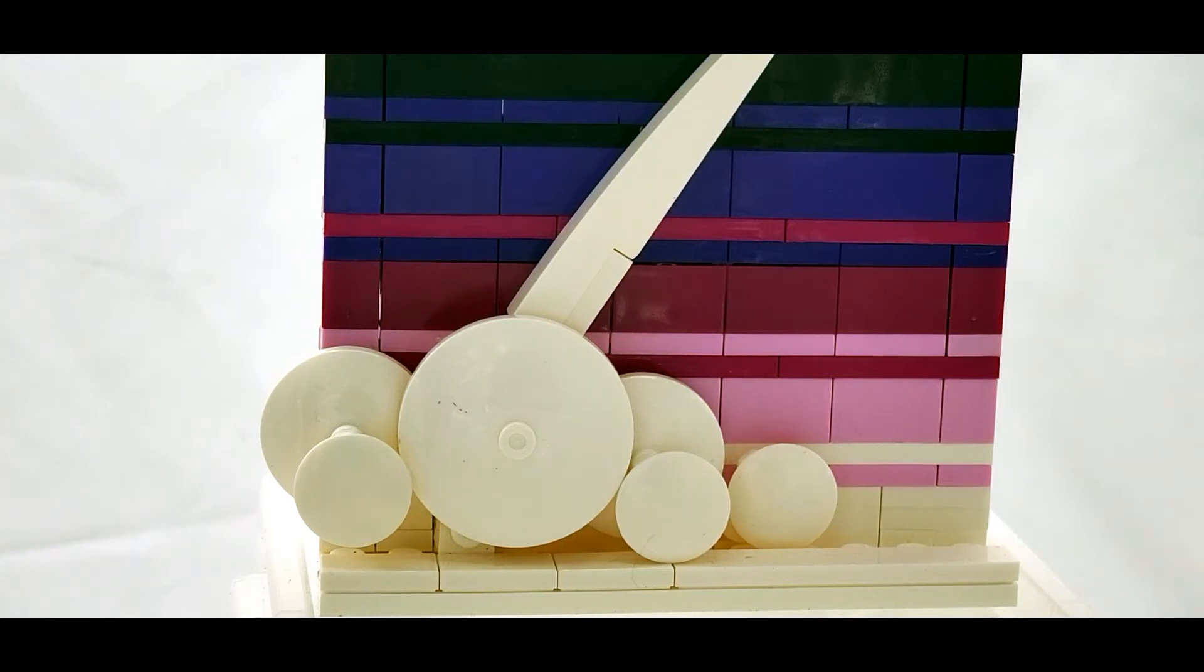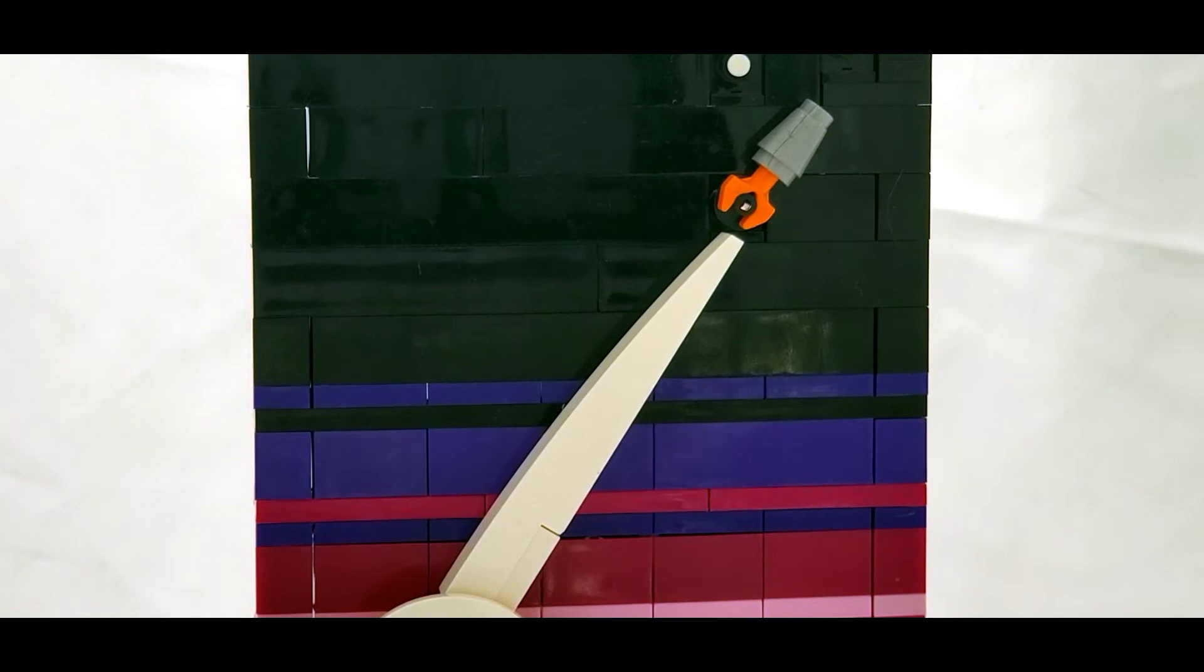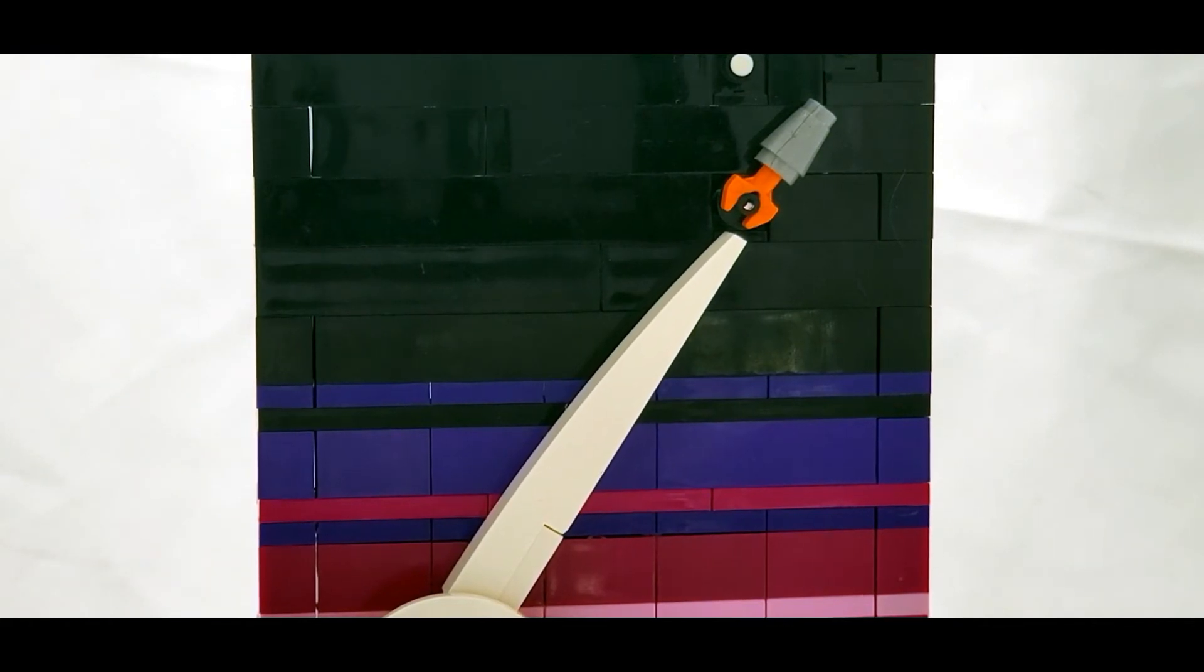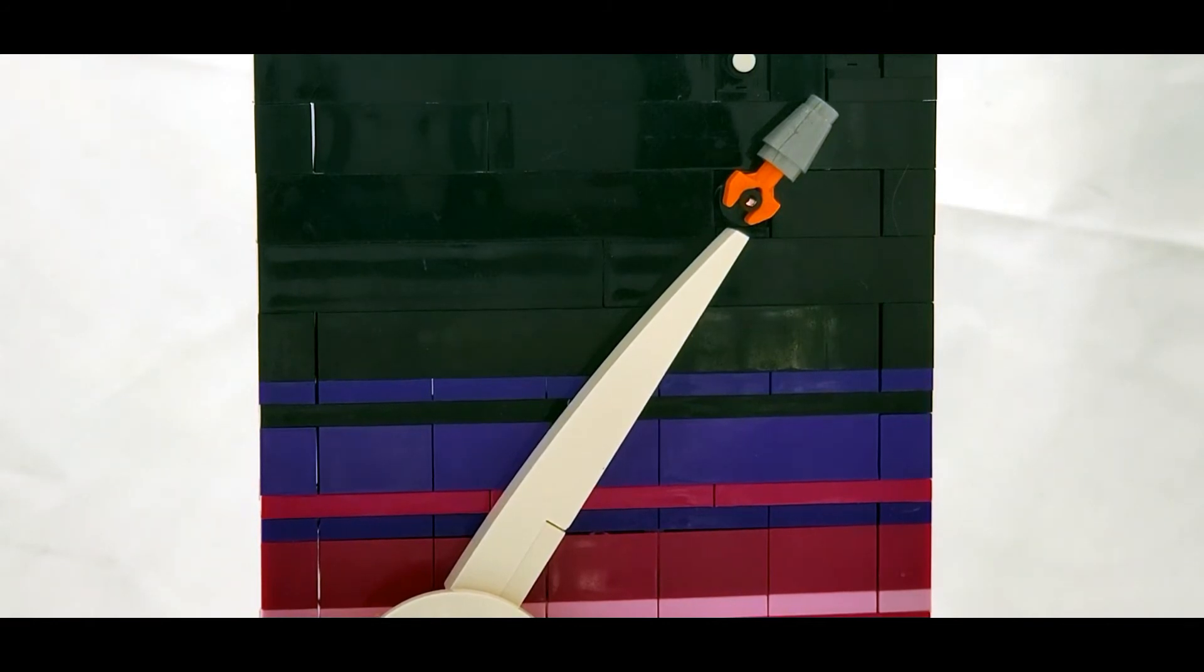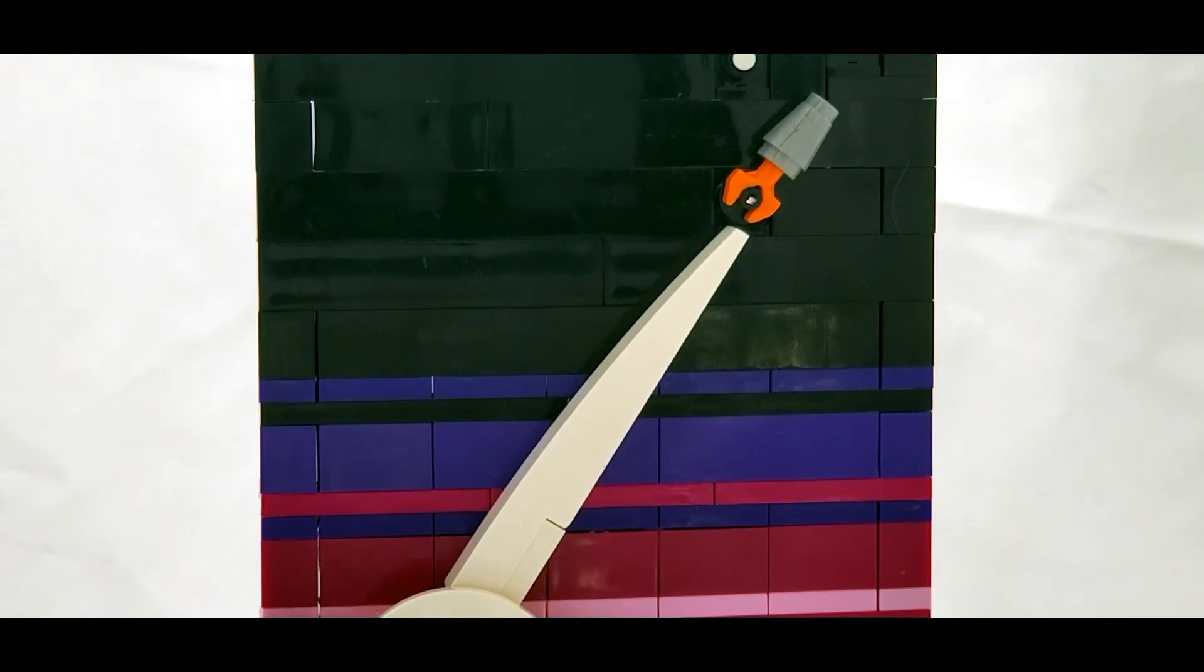He does this nice technique where it's not just one block of one color and then a block of another color, but as you can see he interlaces them a little bit so that transition looks smoother. As it goes up and gets darker, it allows for the white of this rocket exhaust and the rocket itself to really stand out.